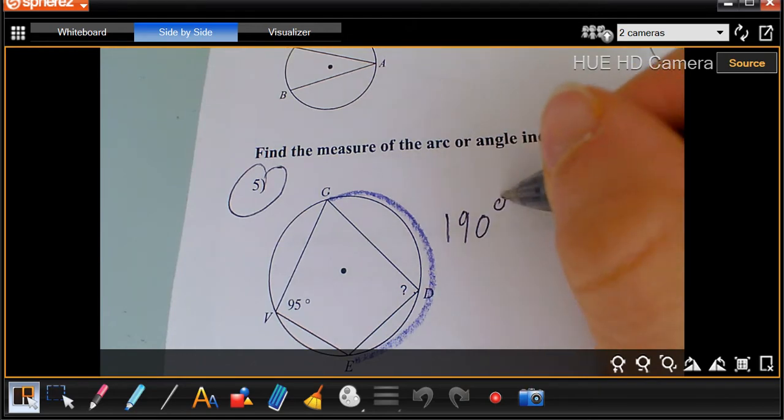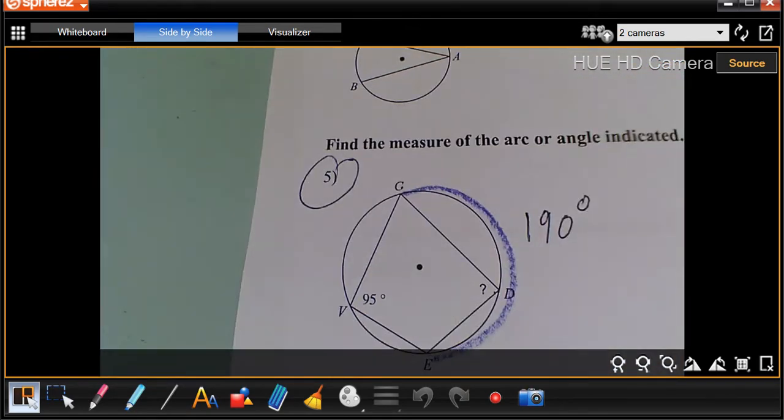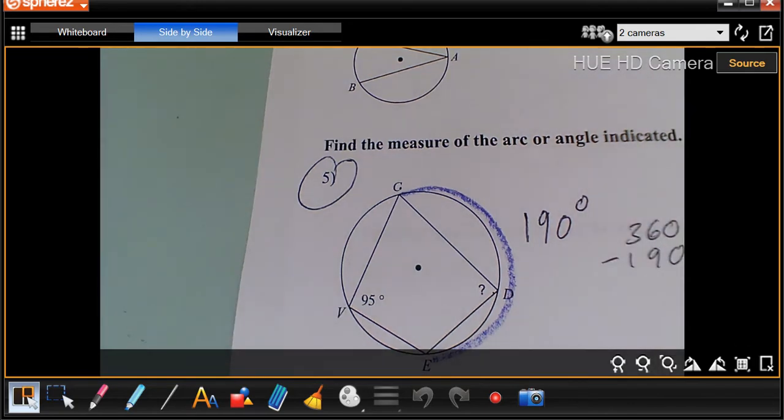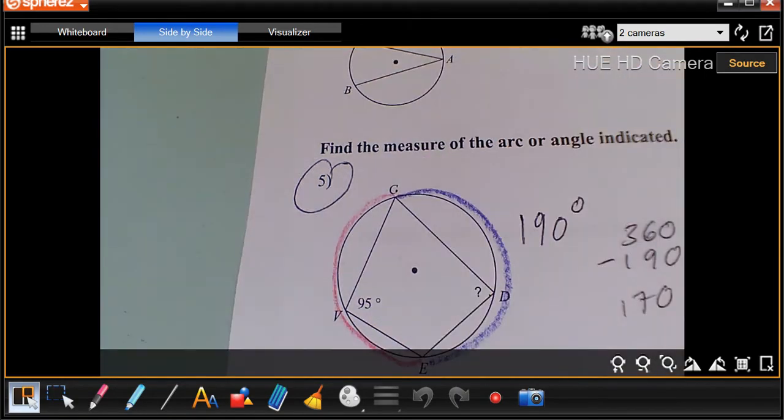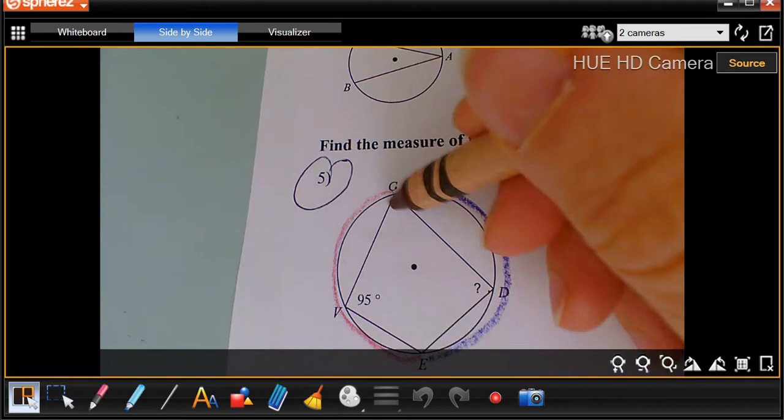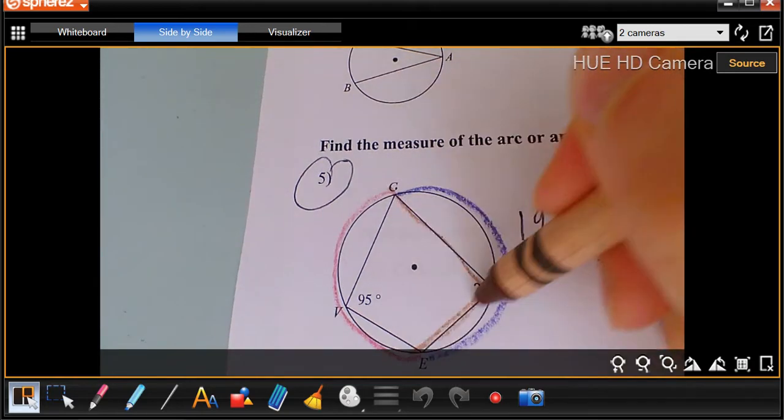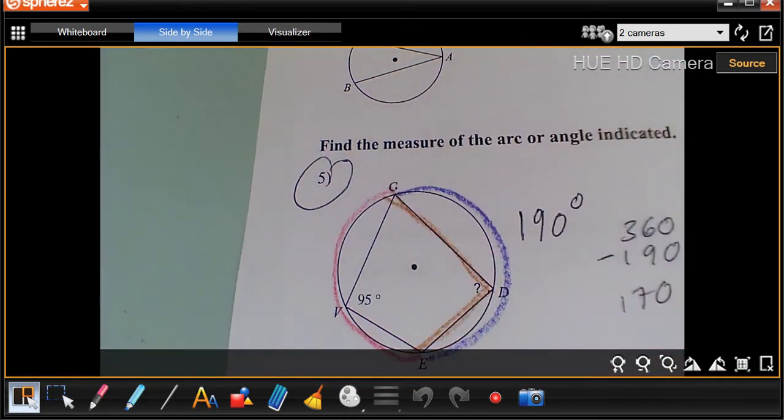So we know this other side, we can go 360 minus 190 gives us 170. So this arc over here that shares with this angle is 170, and it shares with this brown angle right here. Now we're just going to go 170 divided by two, and that gives us 85 degrees.